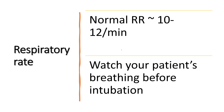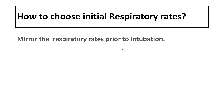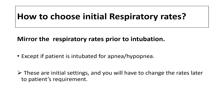Normal respiratory rates are around 10 to 12 times a minute. It is very important to observe your patient's breathing before intubation, because the best way to choose the initial respiratory rate is to mirror the respiratory rate prior to intubation, unless the patient is intubated for apnea or hypopnea. Understand that these are initial settings and you will have to change the rates later for the patient's requirements.